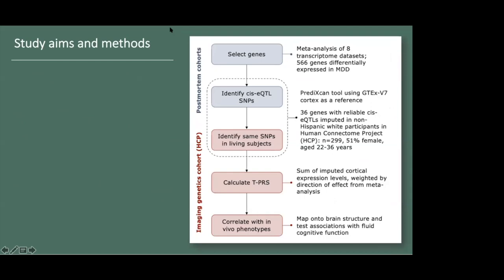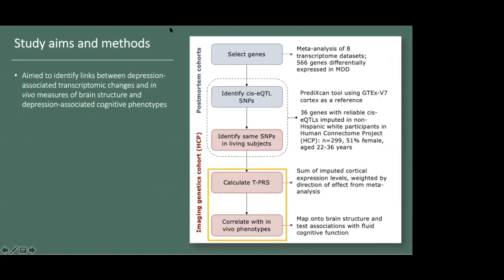The aim of this particular study was to explore how depression-associated transcriptomic changes might translate to differences in in vivo measures of brain structure and to depression-associated cognitive phenotypes. In order to do this, we computed TPRS as described using PrediXcan and GTEx version 7 cortex as the reference transcriptome. Using this method, we were able to reliably impute cortical expression of 36 depression-associated genes, and we did this in a sample of 299 unrelated non-Hispanic white young adult participants in the Human Connectome Project.